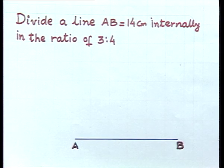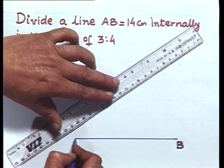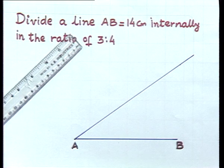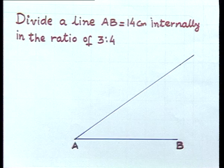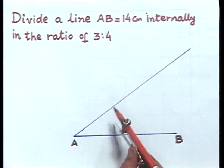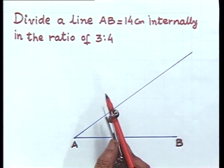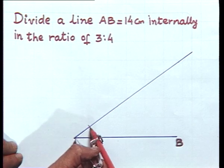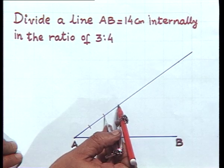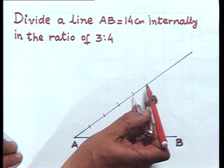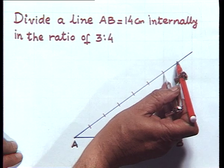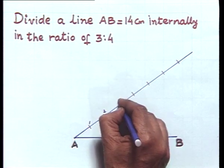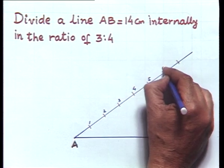After that, we shall make at A any convenient acute angle. After having done this, we will divide this line in seven equal parts, which is nothing else but the sum of the ratio, that is 3 and 4: 1, 2, 3, 4, 5, 6 and 7. Let us name these points as 1, 2, 3, 4, 5, 6, 7.